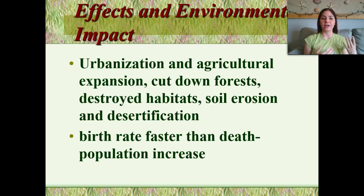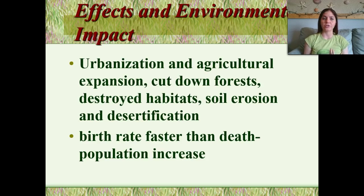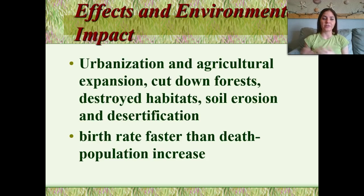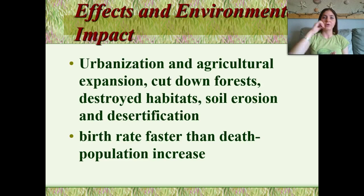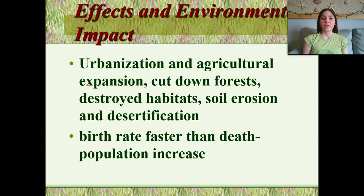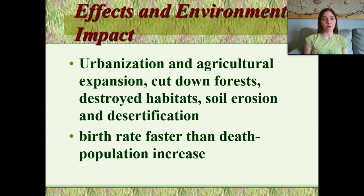The effects and environmental impact included urbanization and agricultural expansion to cut down forests. We destroyed habitats, had soil erosion, and desertification took place. The birth rate was faster than the death rate, so we had a population increase — birth rate high, death rate low. In our agricultural revolution, we were able to feed more people, so more people were able to live, survive, and have more kids.